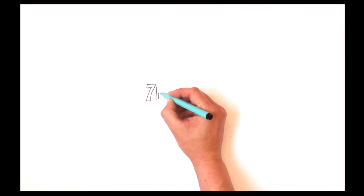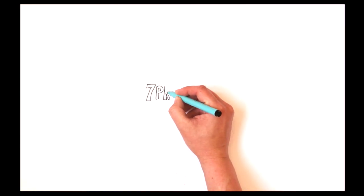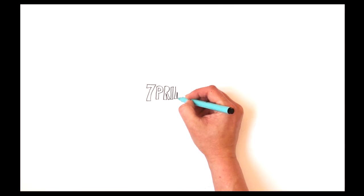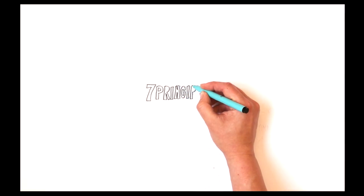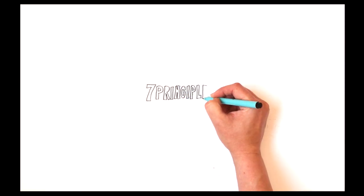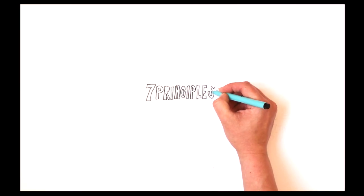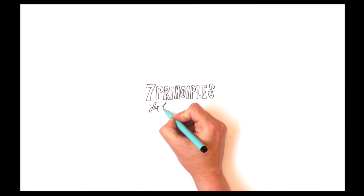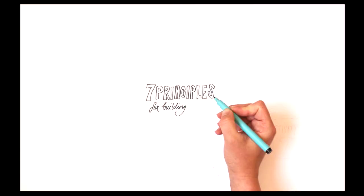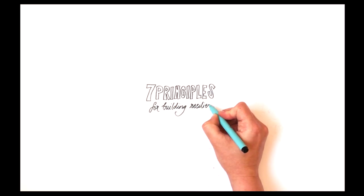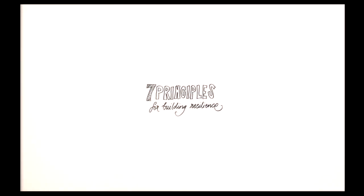In our globalised society, there are virtually no ecosystems that are not shaped by people and no people without the need for ecosystem services. A resilience thinking approach investigates how the interaction between people and nature can best be managed. Here are seven principles to help you apply this approach.